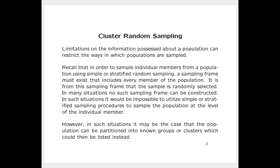It is from this sampling frame that the sample is randomly selected. In many situations, no such sampling frame can be constructed. In such situations, it would be impossible to utilize simple or stratified sampling procedures to sample the population at the level of the individual member. However, it may be the case that the population can be partitioned into known groups or clusters which could then be listed instead.